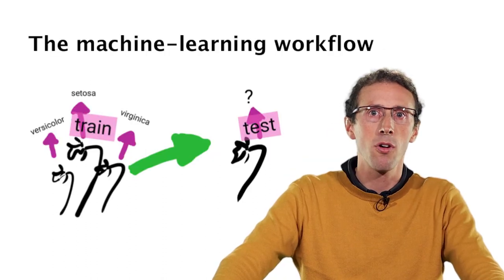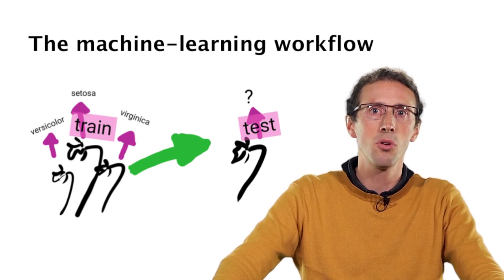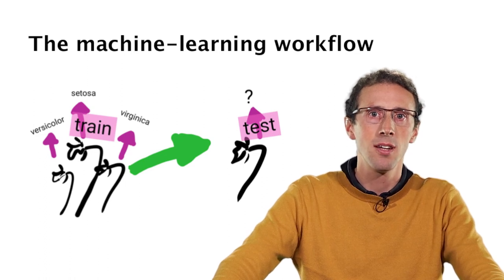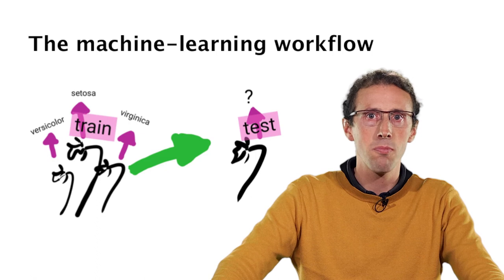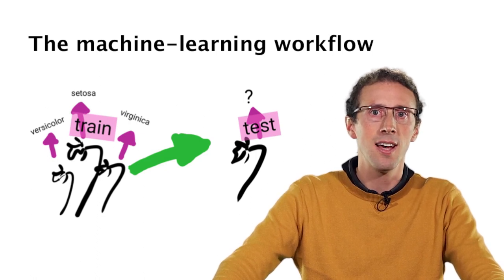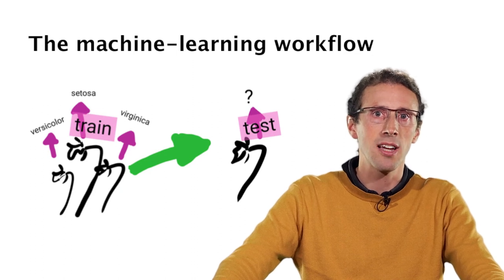The typical workflow in machine learning is to use a given data set to learn a predictive model. For instance, predicting the type of iris. And then to apply it to new data, or what we will call a test set, to put the model in production or to check its validity.